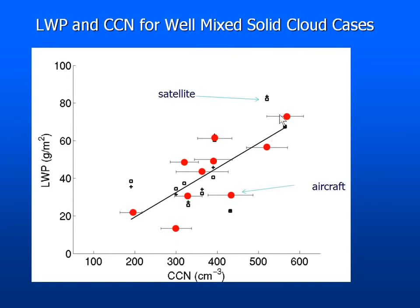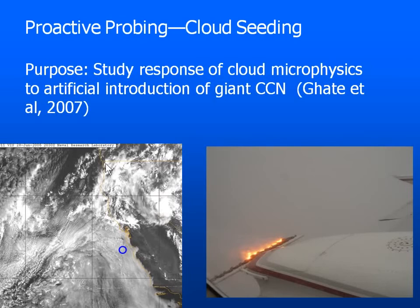There's not a lot of variability at least in the boundary layer structure. What's interesting is the liquid water path — the red points are from the aircraft and the other points are satellite estimates. We did find a relationship between liquid water path and CCN concentration, though I'm not going to try to explain exactly why it looks like that. It also points out that other things affect the liquid water path and aerosols in unison, so one has to be careful in this natural laboratory in understanding how that works.